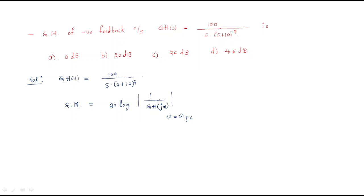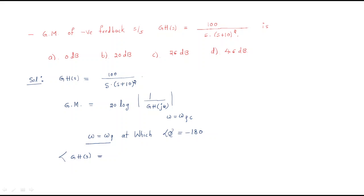What is phase crossover frequency? It is the frequency at which the phase of the system equals minus 180 degrees. So first we need to find the phase of the system and then set it equal to minus 180 degrees.